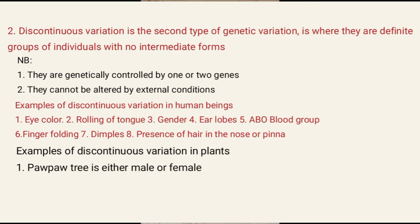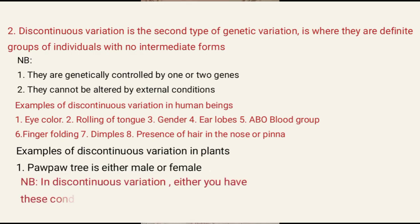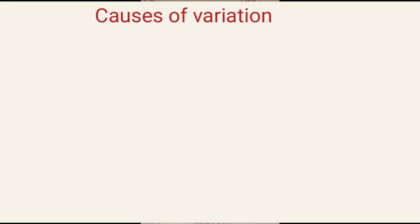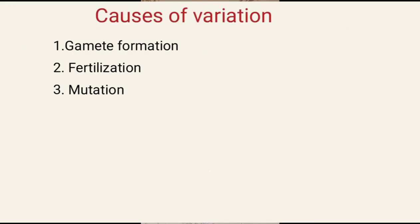In plants, we have the pawpaw tree, which is either male or female. In discontinuous variation, you either have these conditions or you don't. From there, we need to know causes of variation. Mainly, there are three causes of variation: Number 1, gamete formation; Number 2, fertilization; Number 3, mutation.